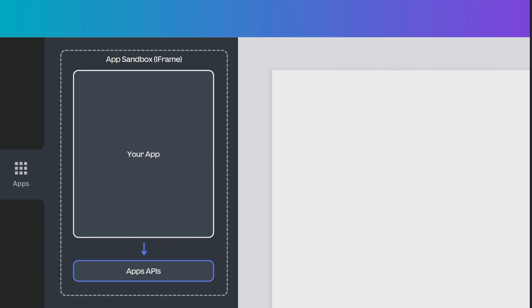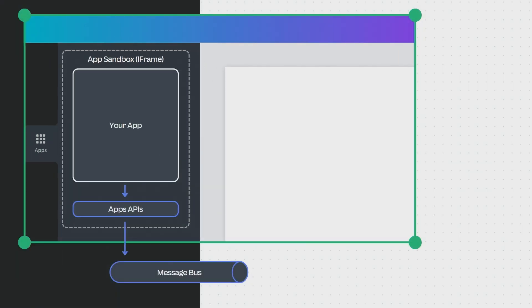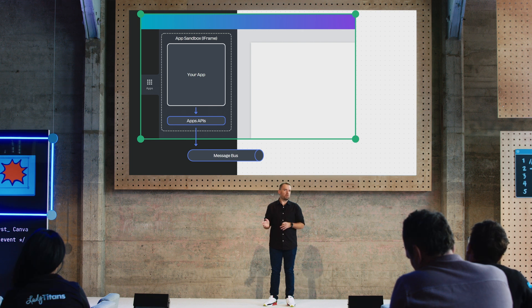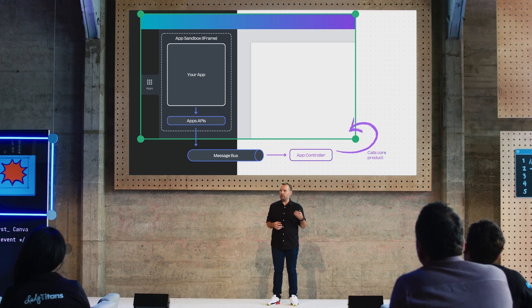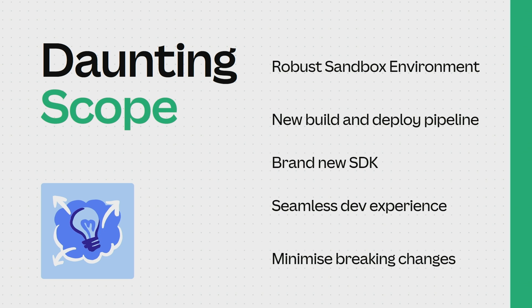Apps communicate to our various APIs that are available inside the sandbox. Under the hood, these APIs communicate to a message bus that marshals messages back and forth between the Canva experience and the app. The message bus speaks to an app controller, which is a great place where we can absorb breaking changes from our product teams and ensure that the product teams can evolve independently from our API. We needed to build a stable, secure, sandboxed environment with a brand new build and deploy pipeline, complete with a new SDK and a seamless developer experience that doesn't introduce any breaking changes.